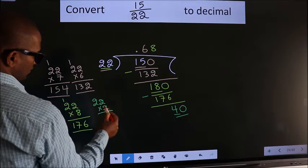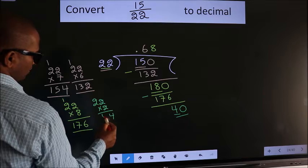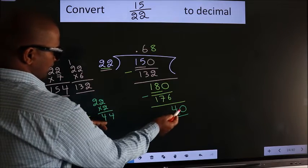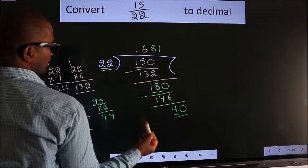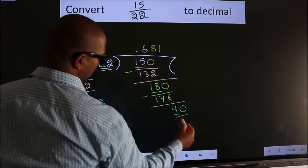it will be 2 twos 4, 2 twos 4. This is exceeding 40, so we cannot take 2. So, we should go with 1. So, 22 into 1, 22.